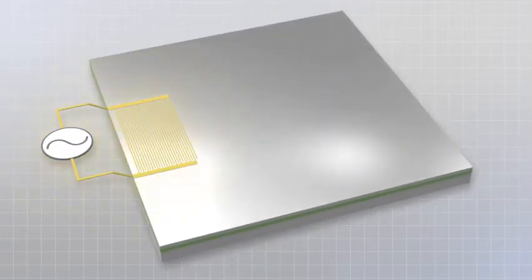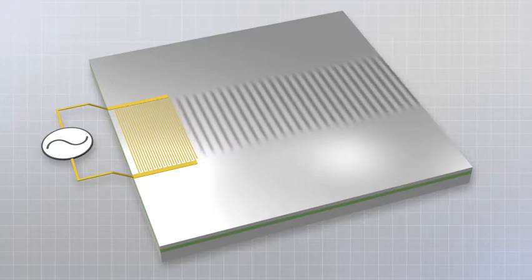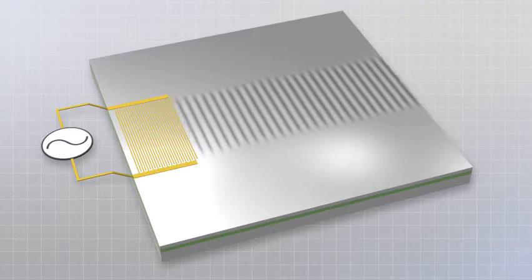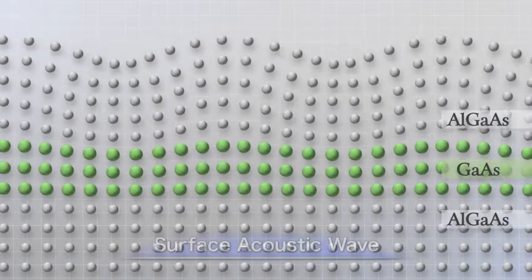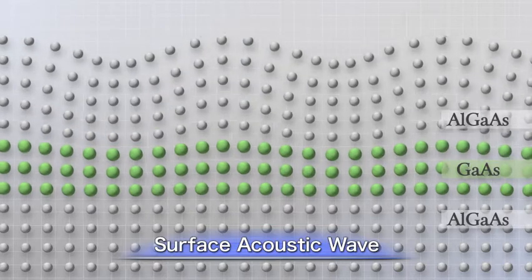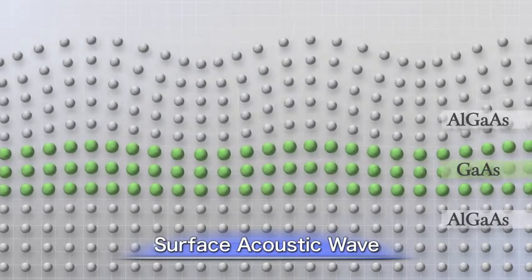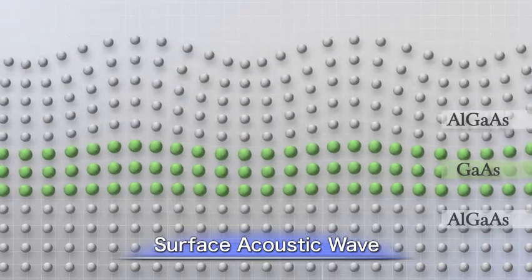This chip has a circuit for generating ultrasonic waves. When ultrasonic waves are generated, these waves are transmitted across the surface of the chip. This is a cross section of the chip. The ultrasonic waves are transmitted as the strains in the semiconductor crystals. This phenomenon is called a surface acoustic wave.